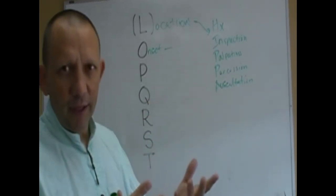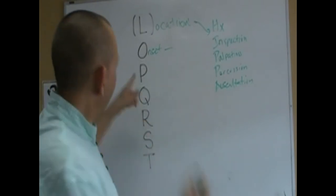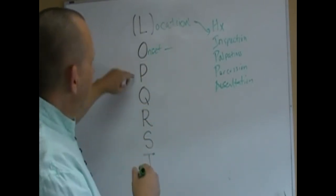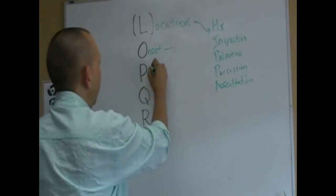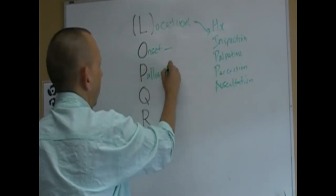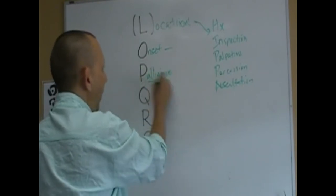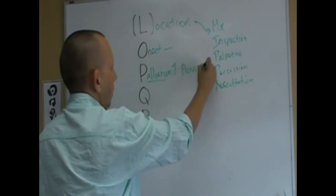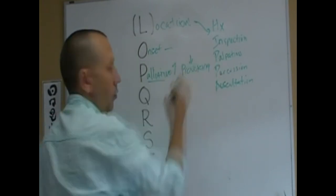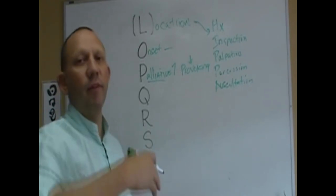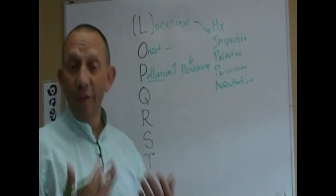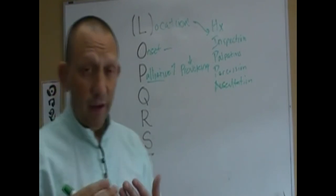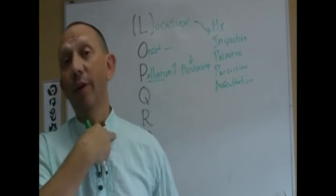Next is palliative and provoking. What makes it better, what makes it worse? When I move my arm this way it's better. For example, thoracic outlet syndrome is where those muscles tighten up and pinch on the nerves leaving the neck and cause numbness in the fingers and hands.